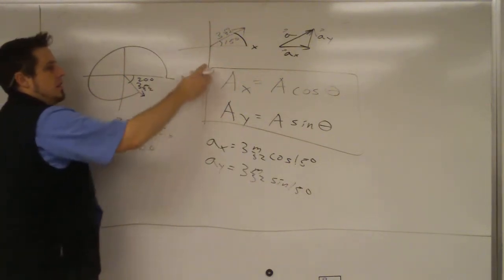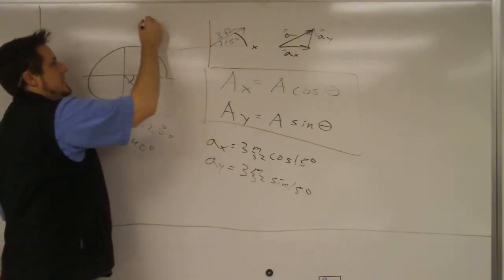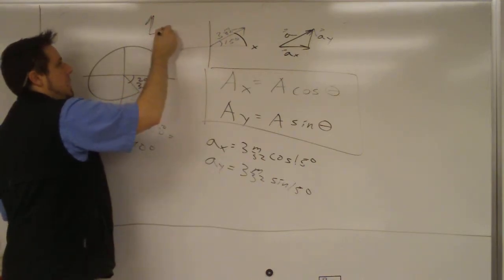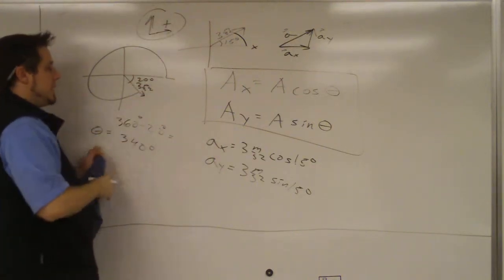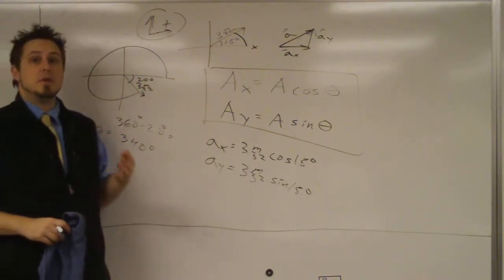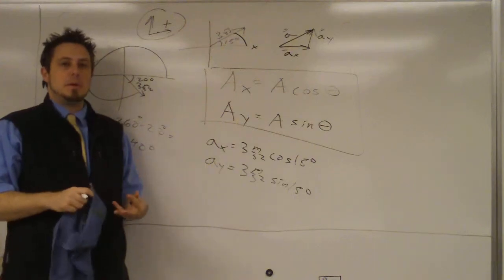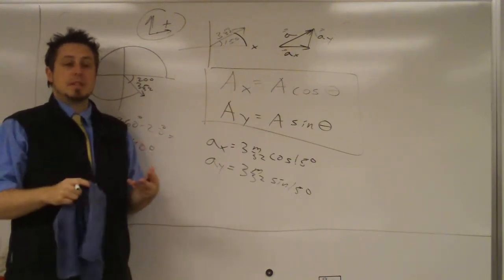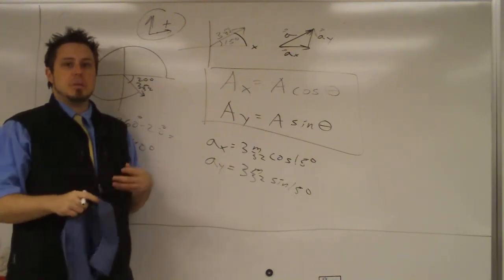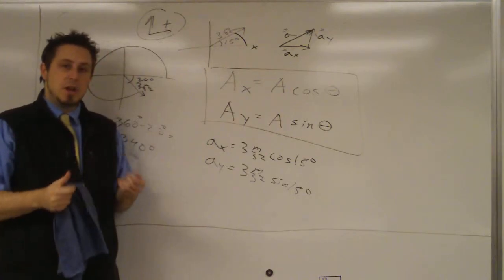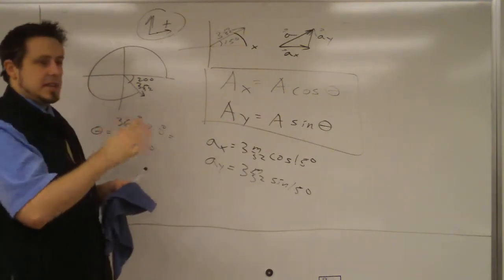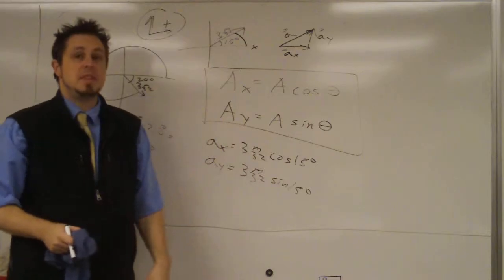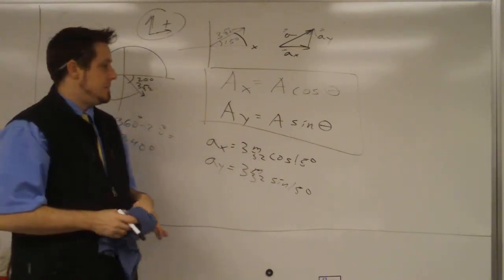One advantage of the automatic method is that if you call up and right positive, this formula will always take care of the sign for you — it puts the correct sign on each component automatically. With the trig method, which I'm about to show, that's not the case. So you can use just the automatic method to solve every problem if you want.